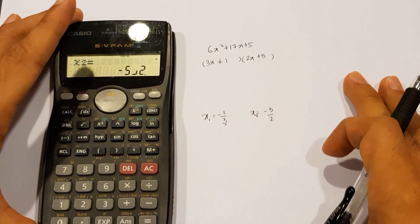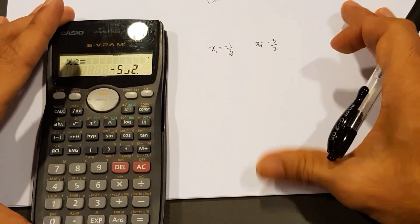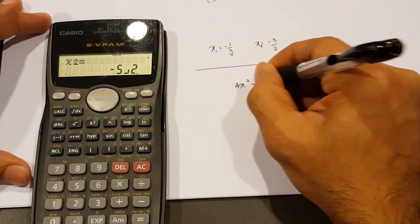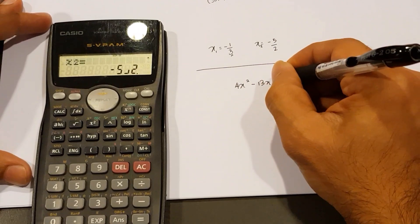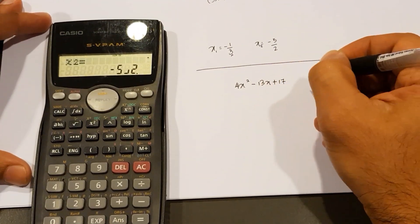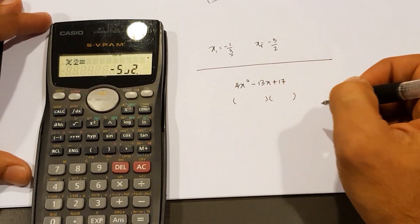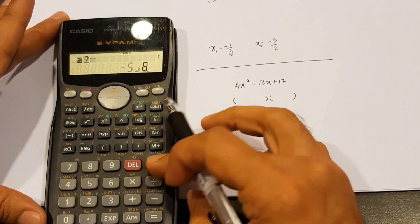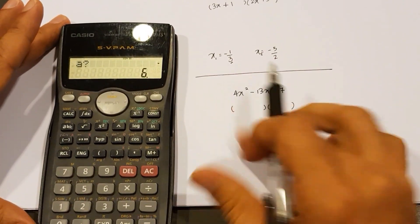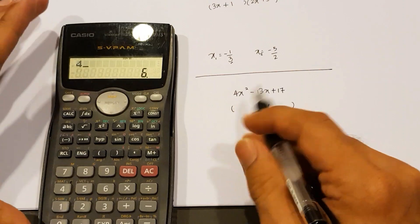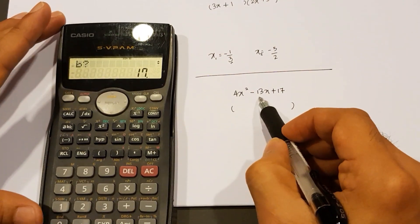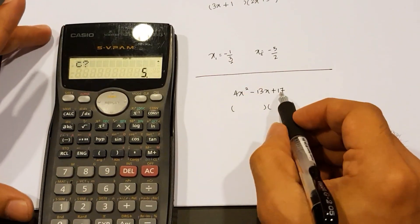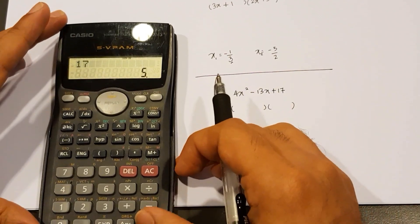There will be some instances where we cannot perform factorization, and how will we know that? Let's have a look at this equation now. Obviously I would expect to get two brackets. Once again, we're going to key in A number, the B number, and the C number. Hit AC. Go back to A. This time, A number here is 4. Don't forget equal. B number now is negative 13. So negative 1, 3 equal. C number is 17. So 1, 7, and then equal.